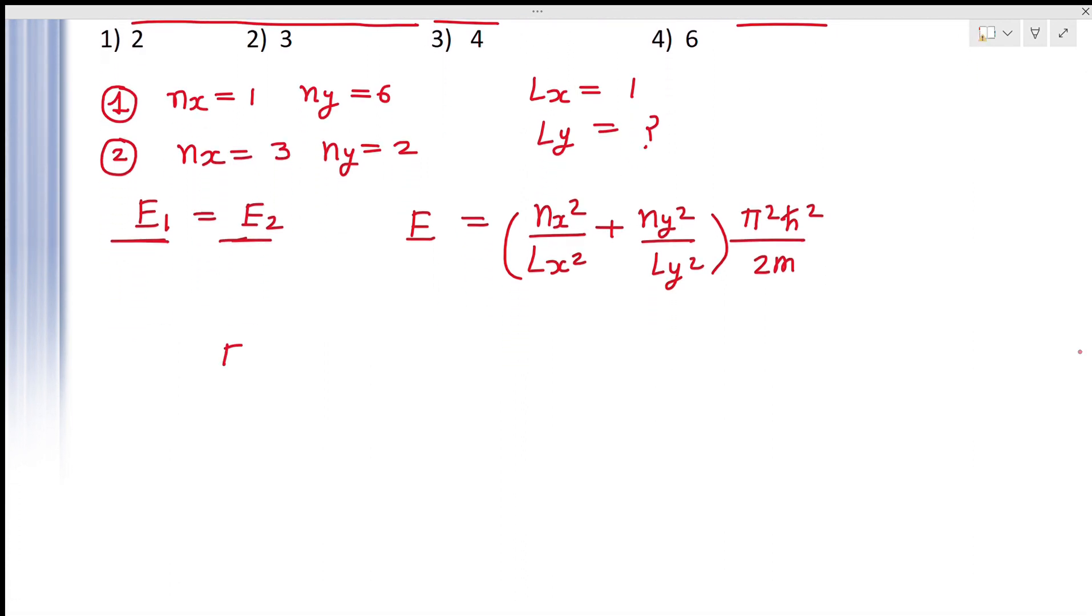For first state, NX is 1. 1 square upon LX is 1, 1 square, plus NY is 6. It means 6 square upon LY square. We do not know LY. Pi square h cross square upon 2m.